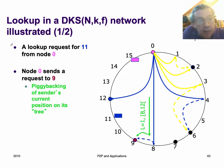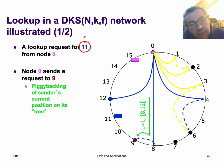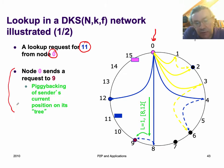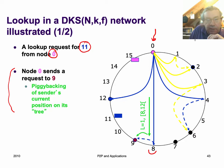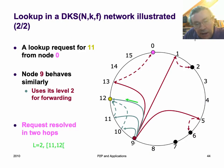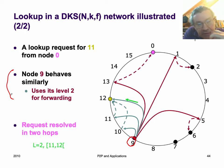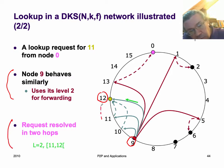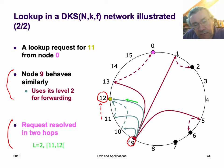Let's do a lookup in a DKS network. Assume we're looking for item 11, starting at node 0. Node 0 sends the request to node 9 — note there's no node at 8, so it goes to node 9. Now at node 9, using interval routing similarly, it sends a request to node 12. Node 12 is the one storing item 11, because the predecessor of 12 is 9, and 11 is between 9 and 12.